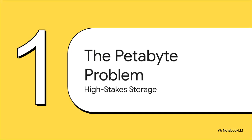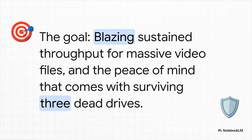So let's talk about the actual problem here. We're dealing with enormous video files, client archives that are absolutely massive. This isn't just about storing some documents. This is about making sure that if three drives die — which can happen — you don't instantly vaporize a client's entire project. They needed two things more than anything else: blazing fast speed to work with huge files without any stuttering, and the ability to sleep at night knowing your system can take a few hits and not lose a single byte of data.